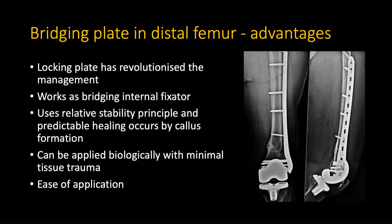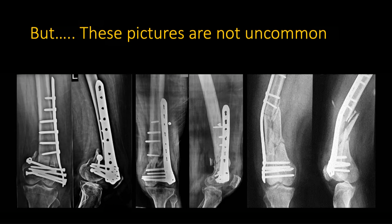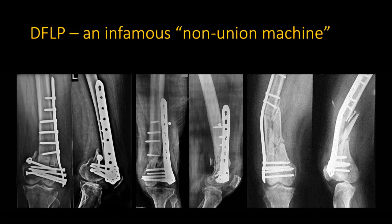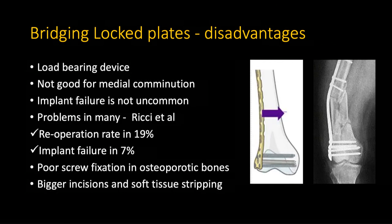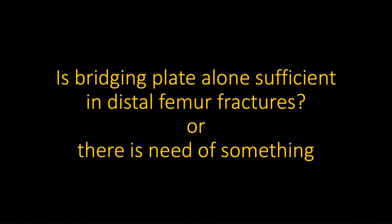Bridge plating in distal femoral fractures has some advantages. The locking plate has revolutionised management principles — it works as a bridging internal fixator, uses relative stability principle, and predictable healing occurs by callus formation. It can be applied biologically with minimal tissue trauma. But these failure pictures are also not uncommon, and for that reason it is infamously known as a 'non-union machine.' So there are disadvantages: it is a load bearing device, not very good when there is medial comminution, implant failure is not uncommon, re-operation rate touches 20%, and there is poor screw fixation in osteoporotic bones.